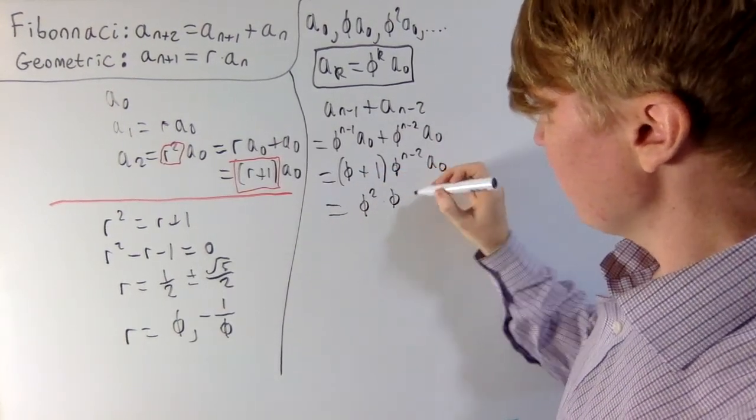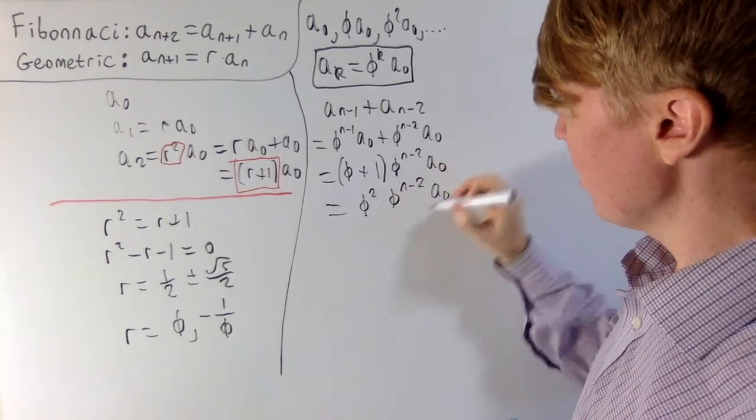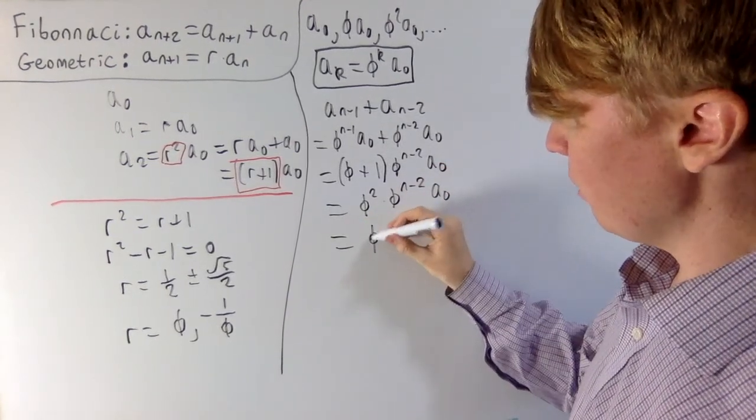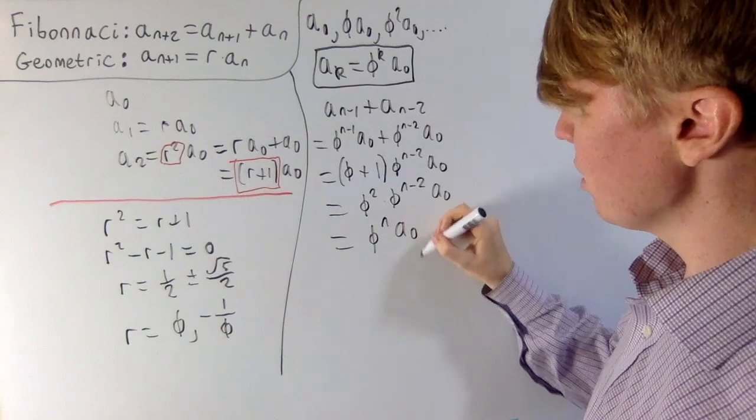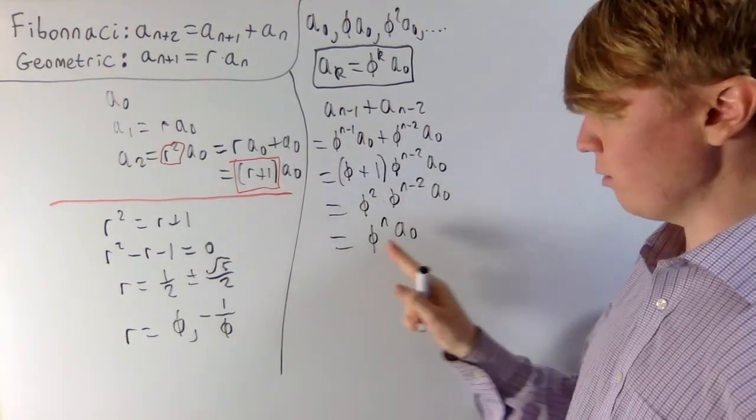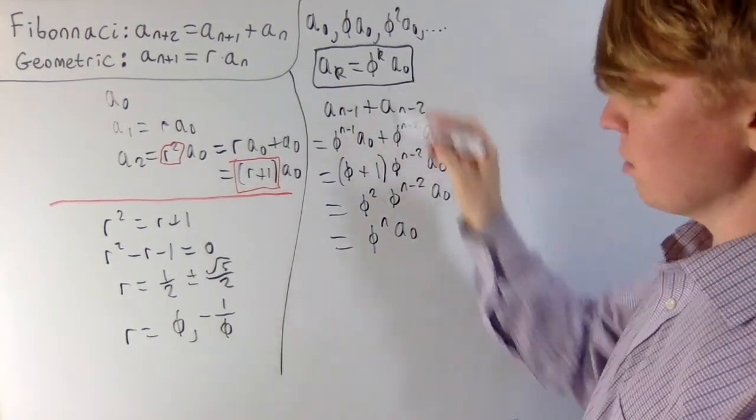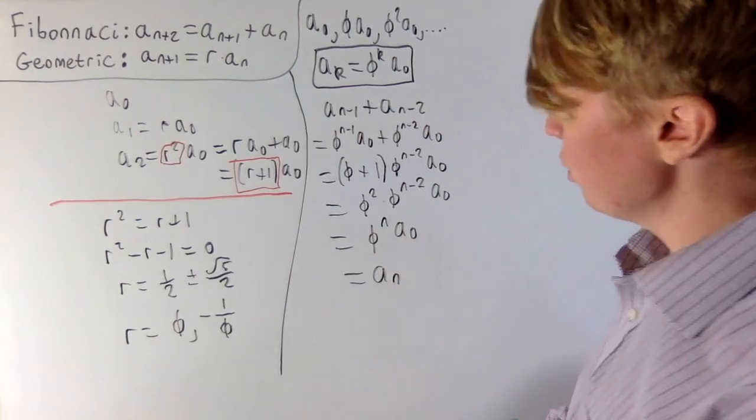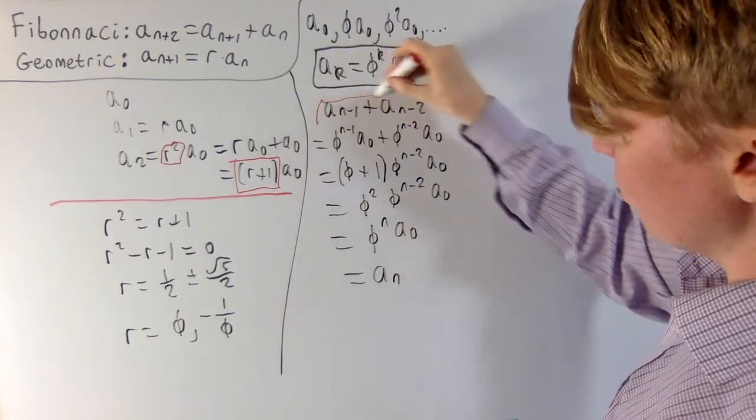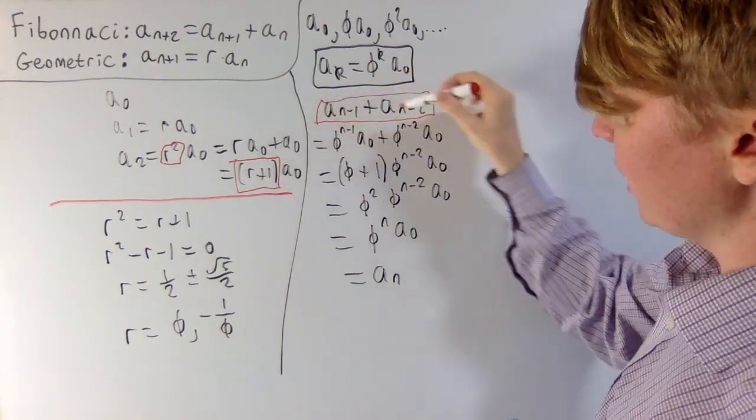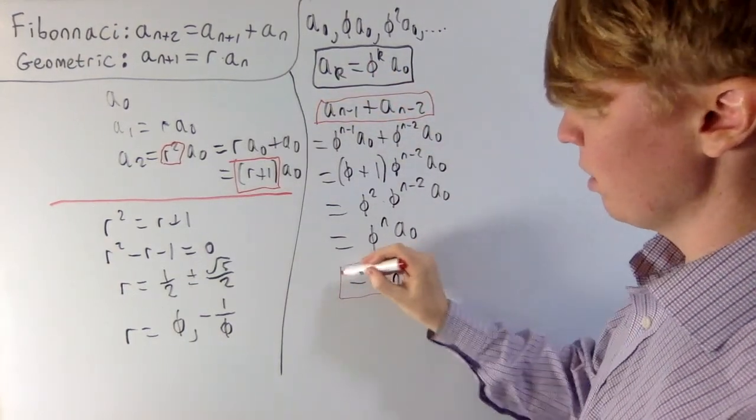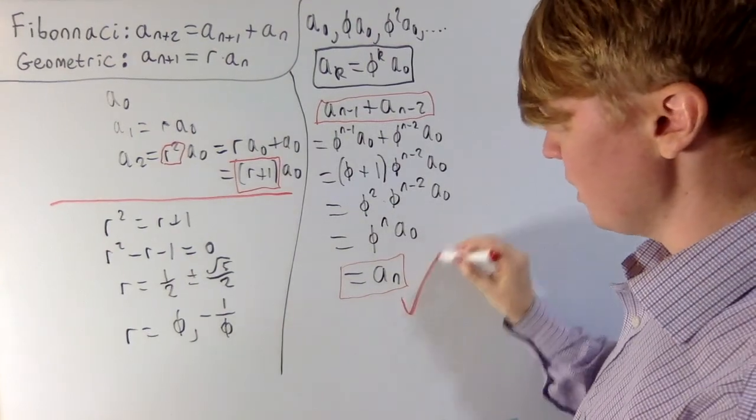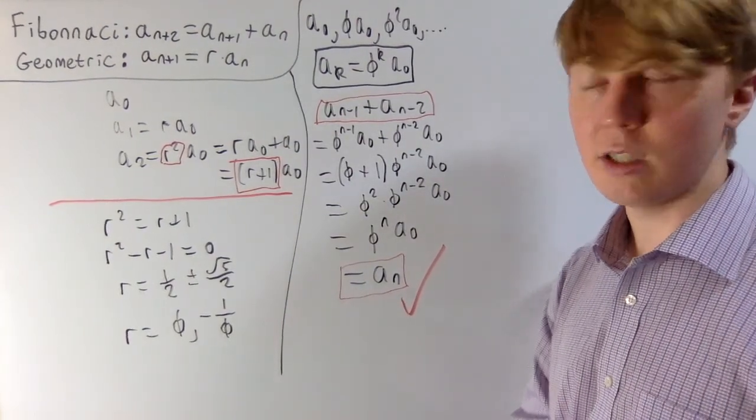So you've got phi squared multiplied by phi to the n minus 2 a0, then combine your powers, you get phi to the n a0. And this is really nice, because now phi to the n multiplied by a0, this is just your nth term. So this is equal to a n. So what we've shown is, any two terms, a n minus 1 plus a n minus 2, their sum has to be equal to the next term. So this is, indeed, a Fibonacci sequence.